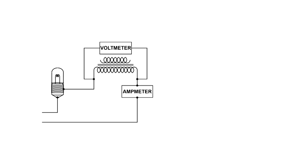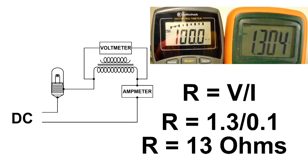Let's take a look at the results. This is the DC result. At 100 milliamps we ended up with 1.3 volts DC. Putting that into the formula R equals voltage over current, we end up with 13 ohms when we run DC through that primary.